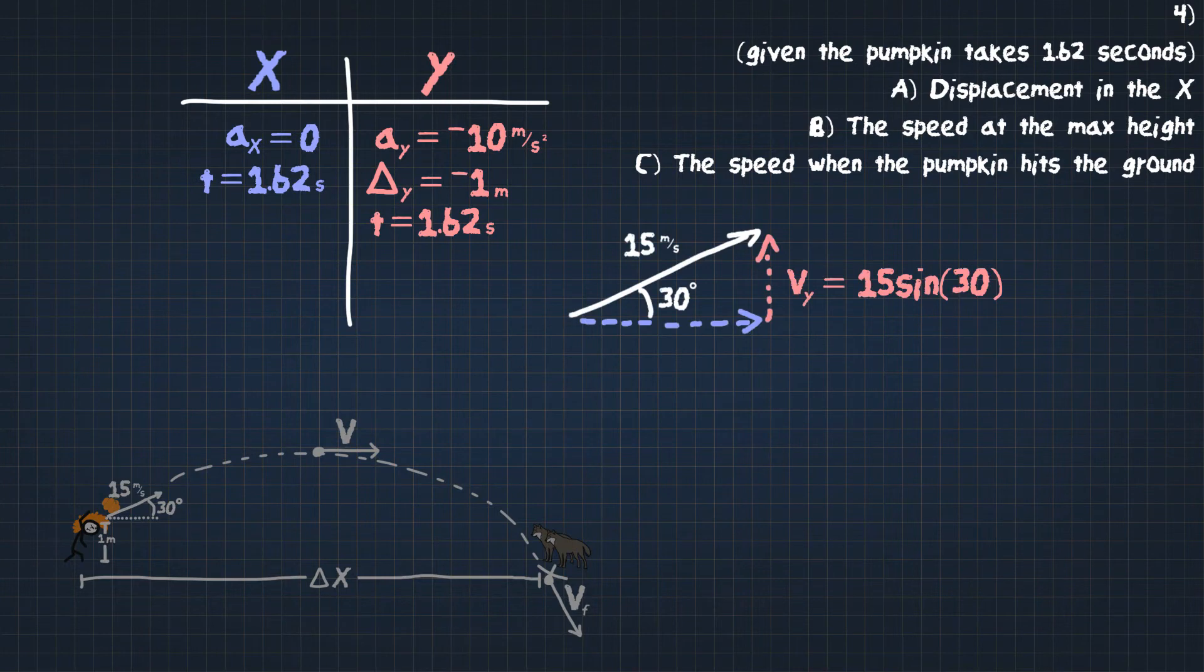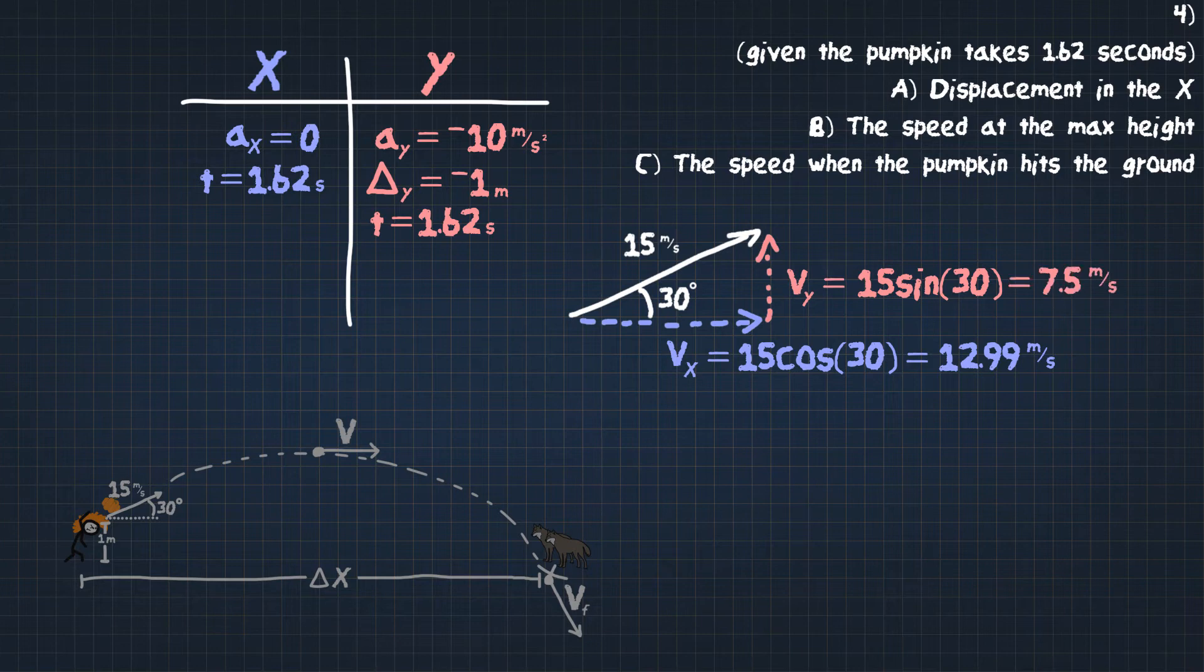When we're looking for the opposite, that's going to be sine. So this is going to be 15 times sine of 30. And for the x, since this is adjacent, this is going to be 15 times cosine of 30. Let's put this into our calculators. 15 times cosine of 30, we get 12.99 meters per second. 15 times sine of 30, and this is going to be 7.5 meters per second. Velocity initial in the y equals 7.5 meters per second, and velocity initial in the x equals 12.99 meters per second.